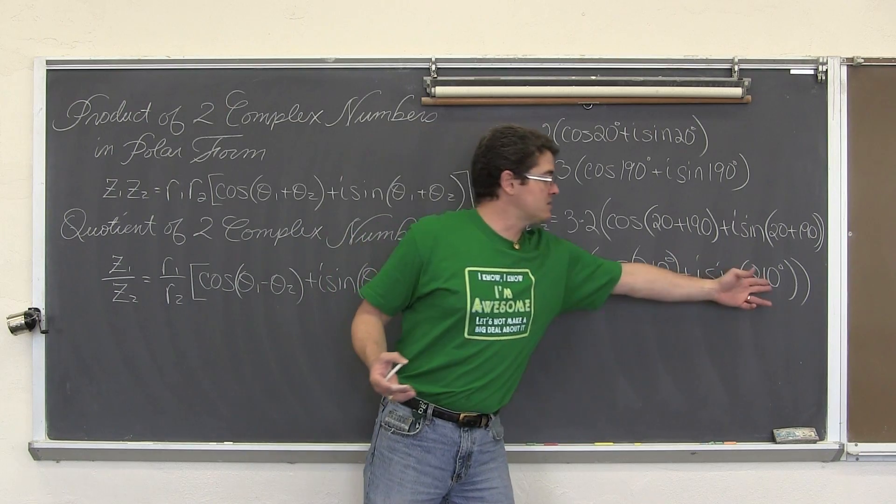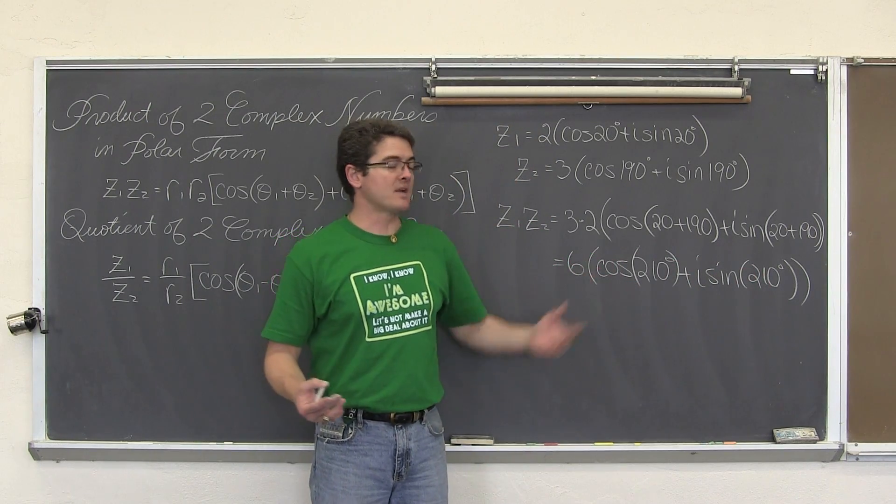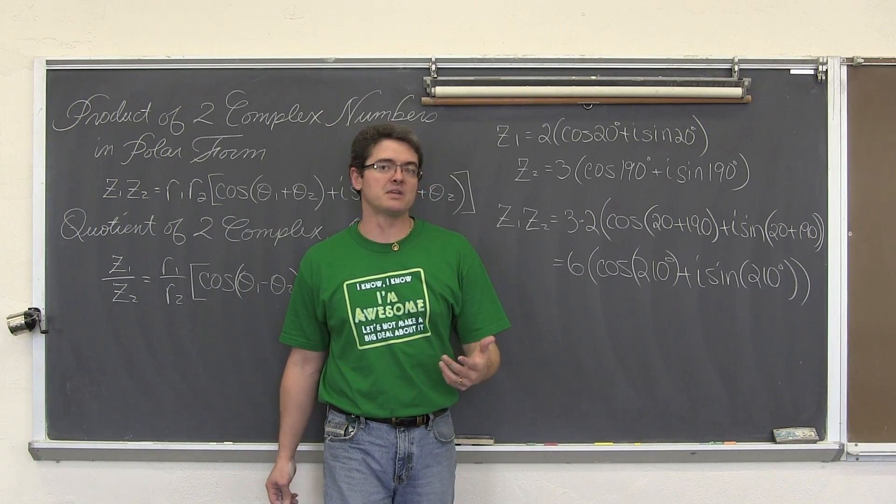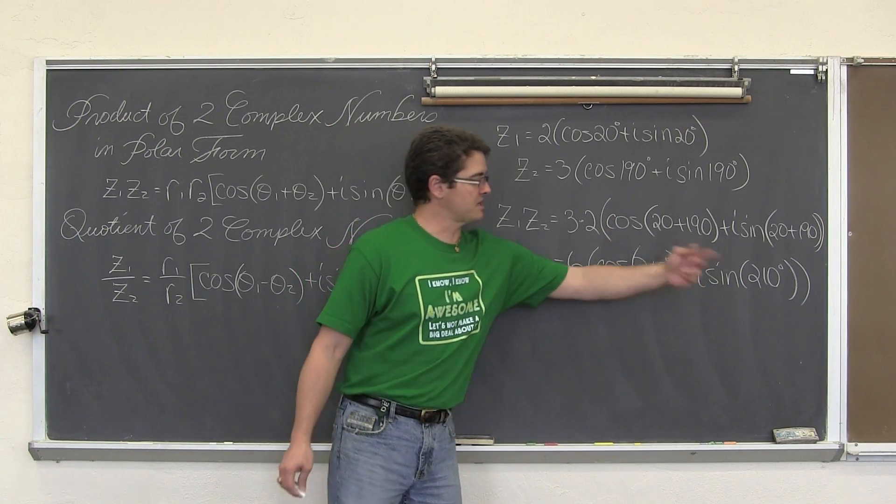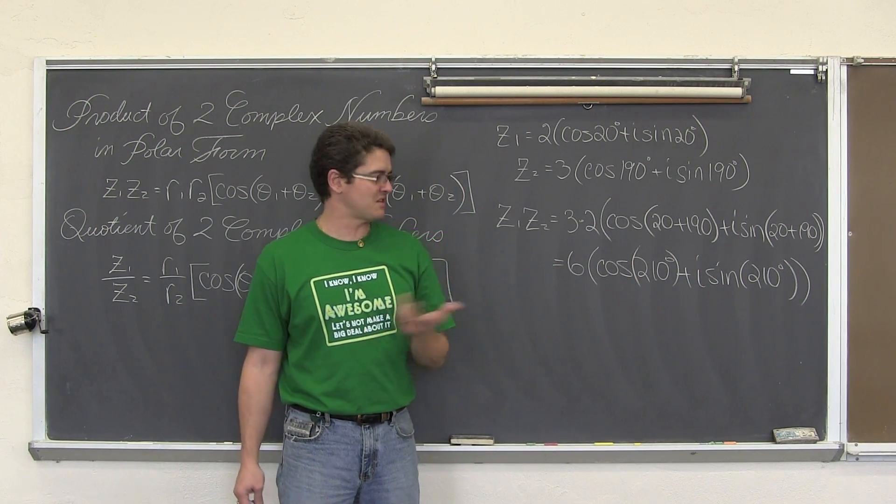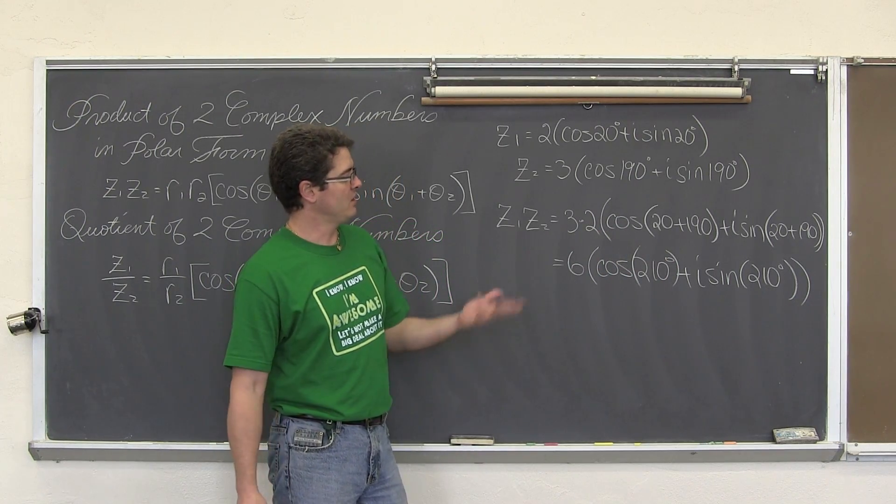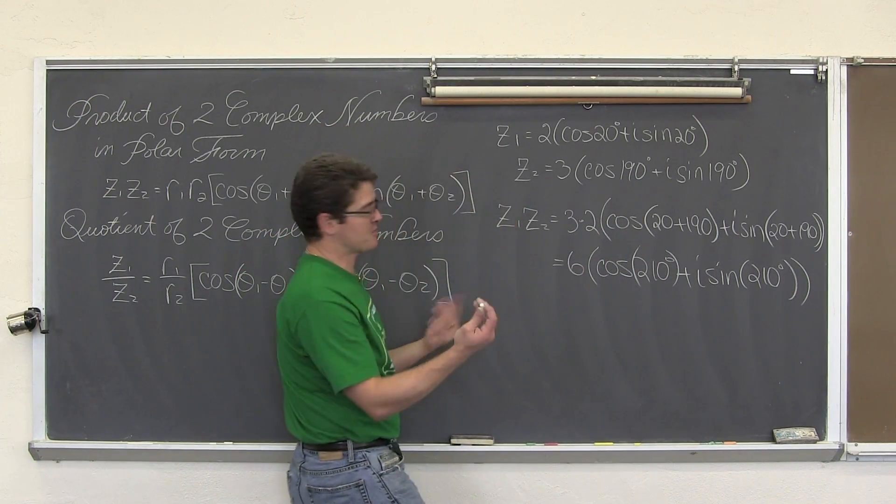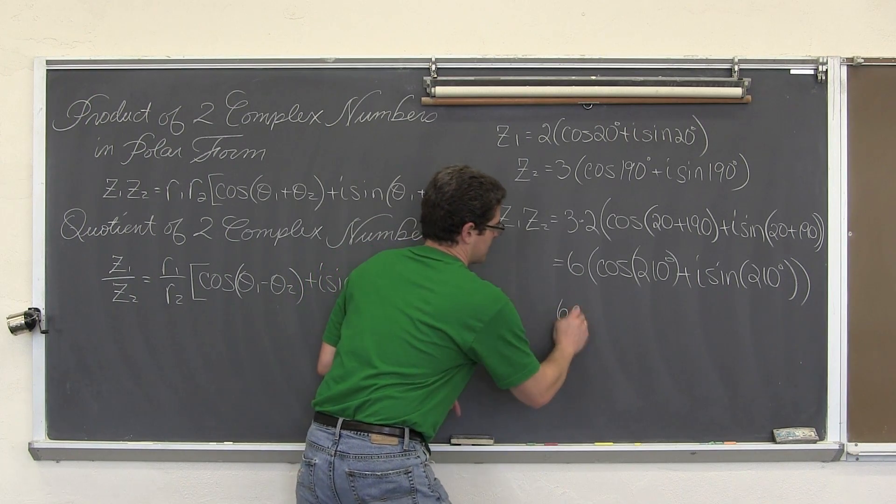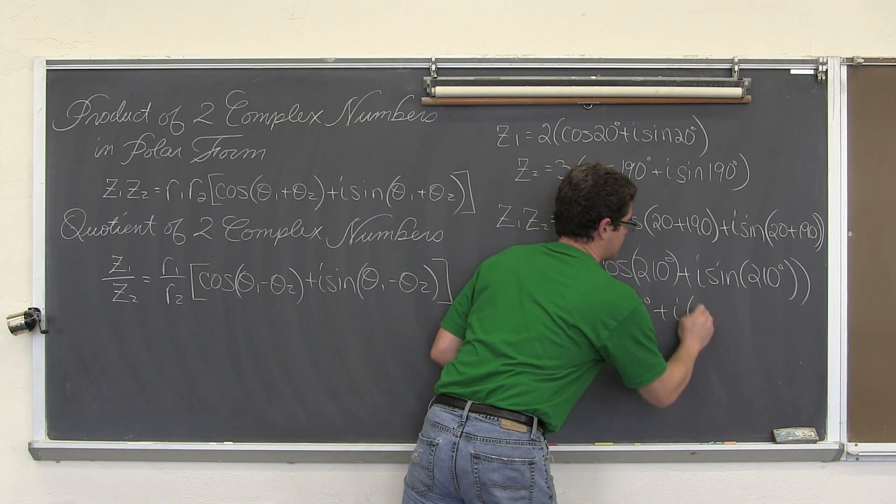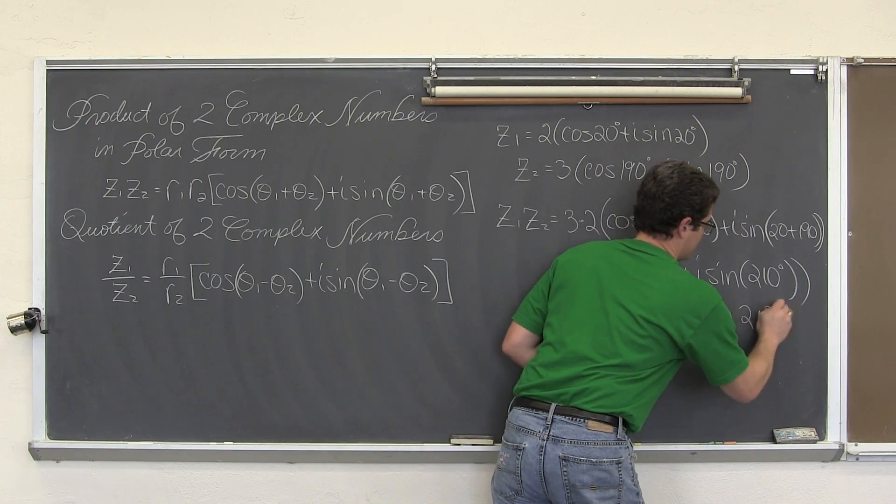If you want to put this back into rectangular form, distribute the 6. So we get 6 cosine 210° plus i times 6 sine 210°. Let's just do that, because there's not much to these problems anyway.